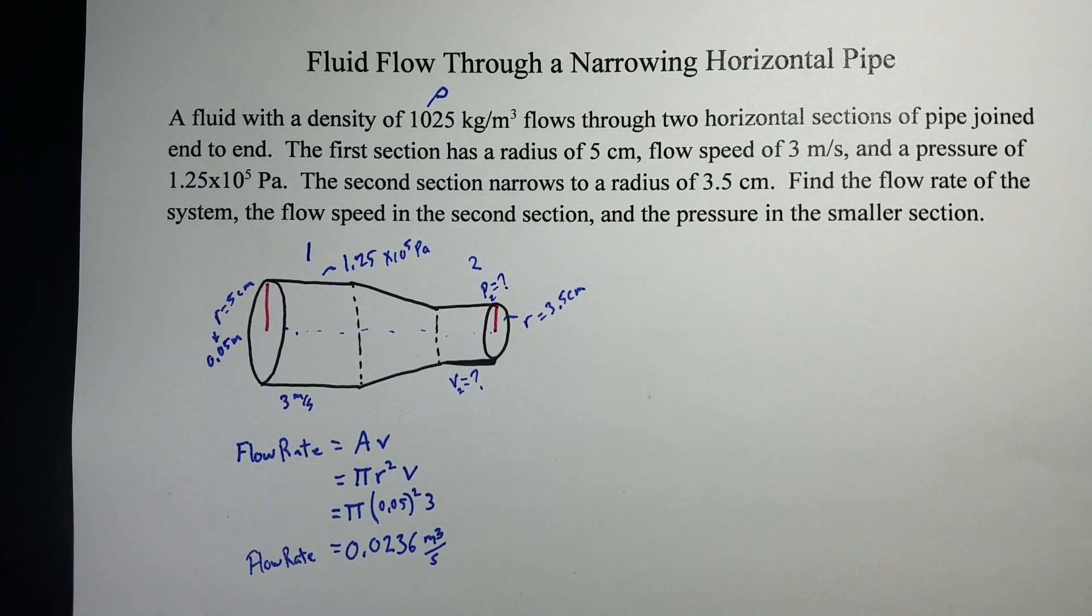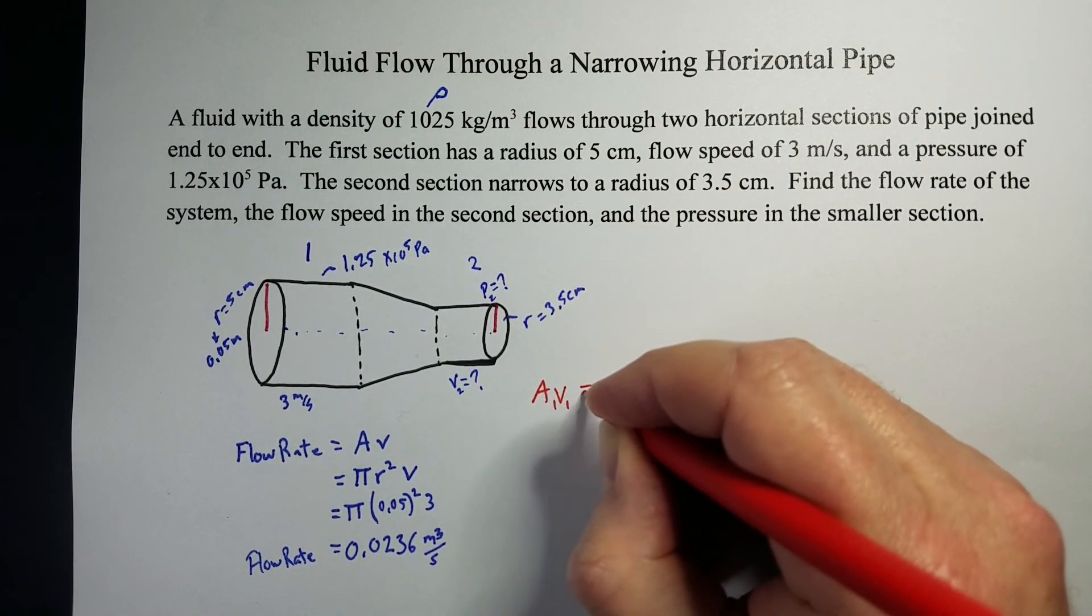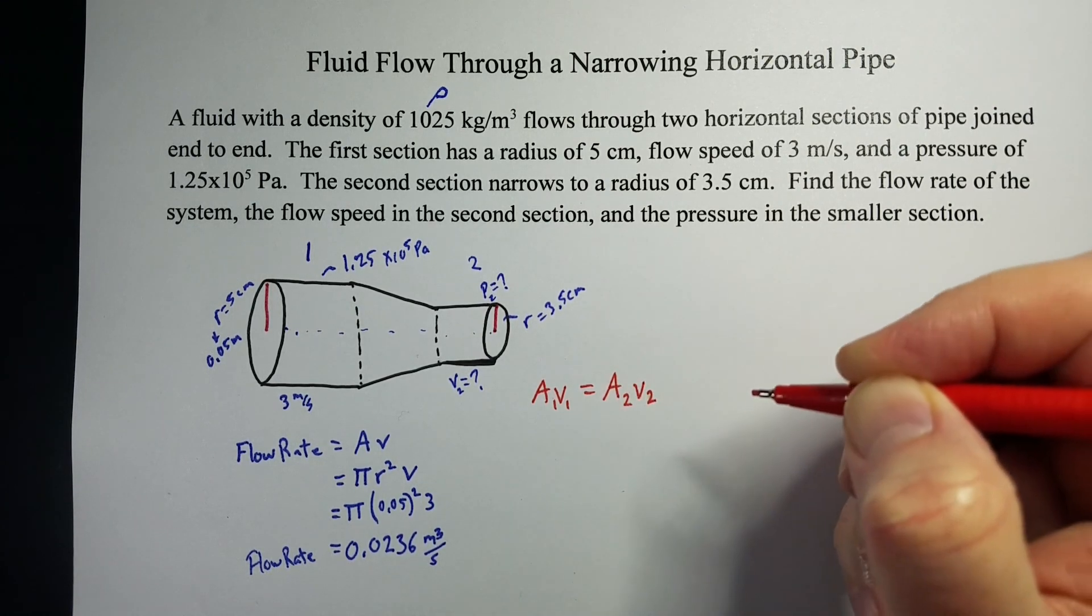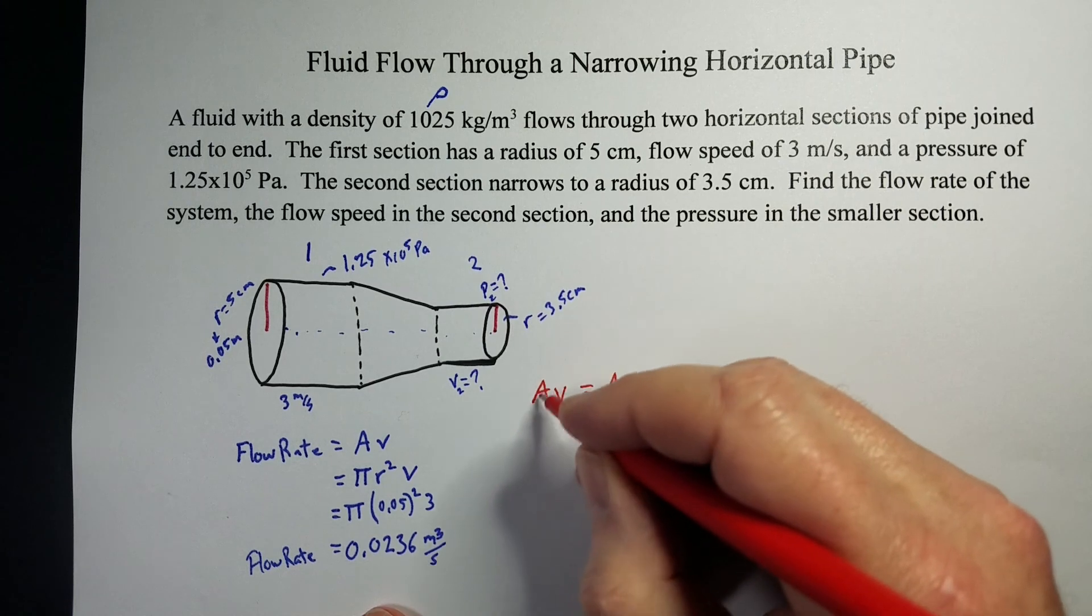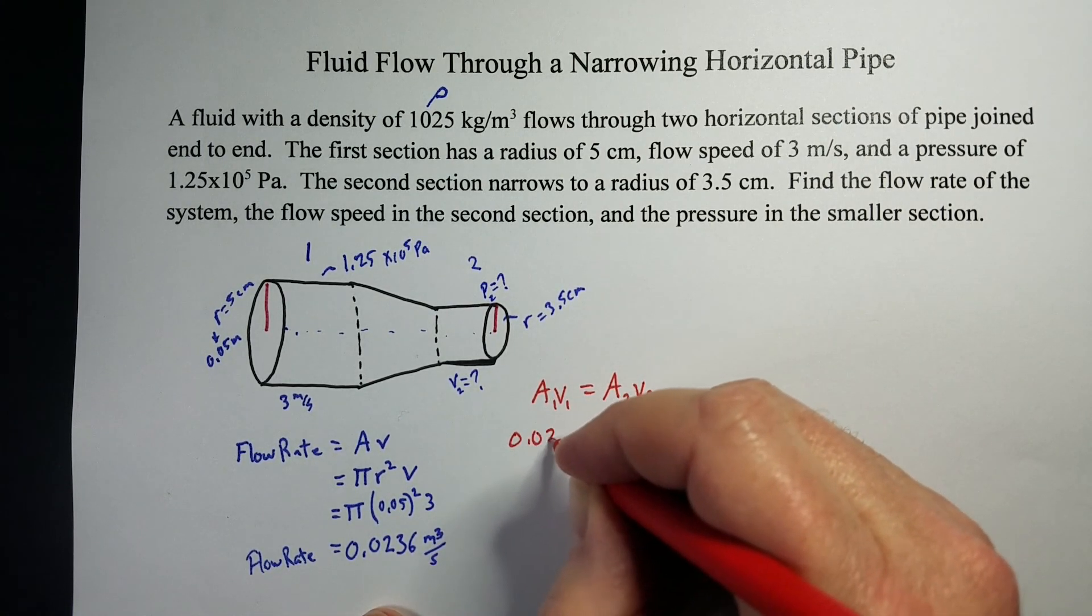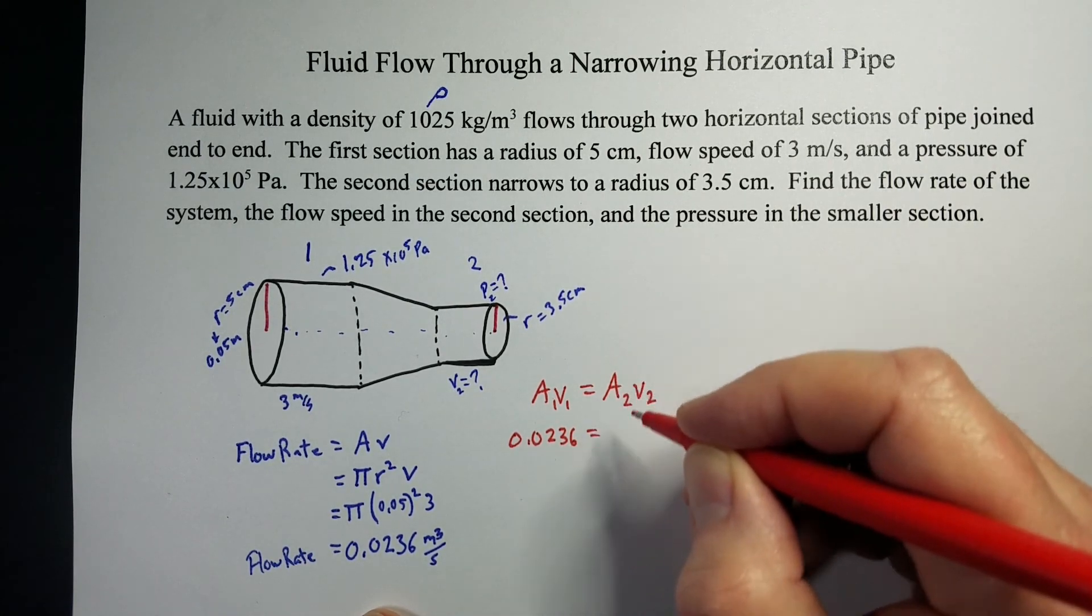And so, to figure that out, we need the continuity equation. AV in one section has to equal the area and velocity in the second section. We already know the first section, we figured it out right there. It's 0.0236. But now we need for the other section.